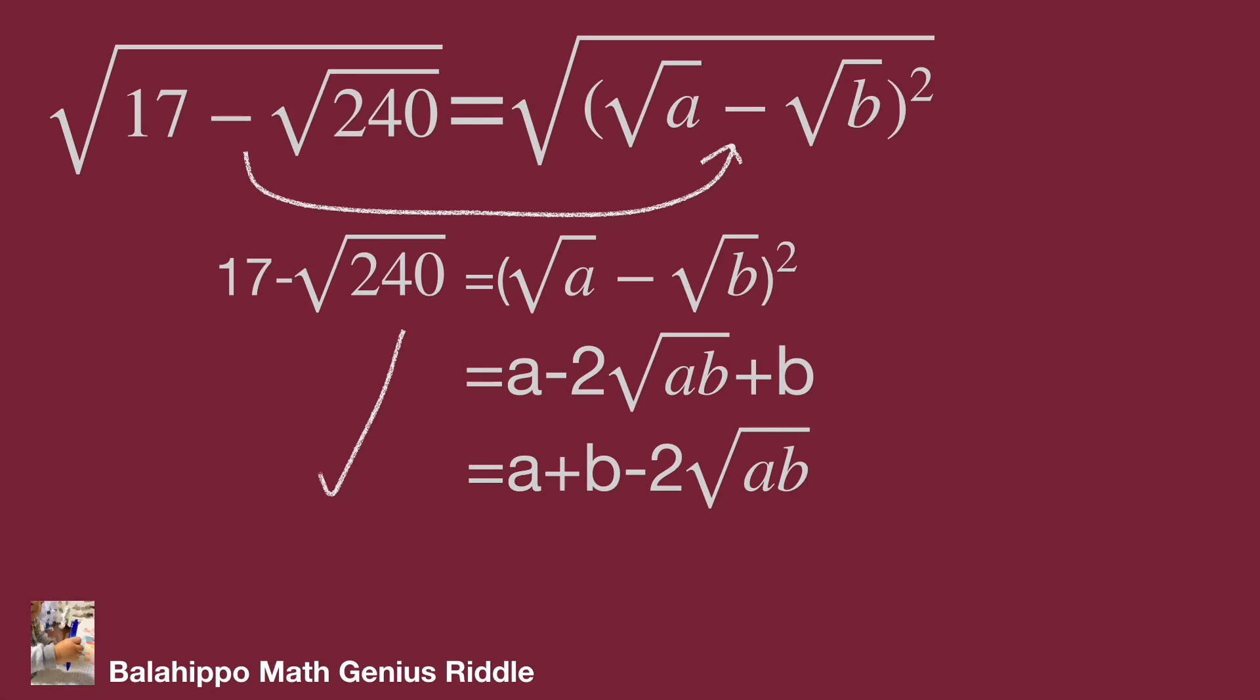Take a look at the square root of 240. Try to balance both sides of this equation. Then square root of 240 equals 4 times square root of 60. Then the left side becomes 17 minus 2 square root of 60. We can define 17 equals a plus b and 60 equals ab.